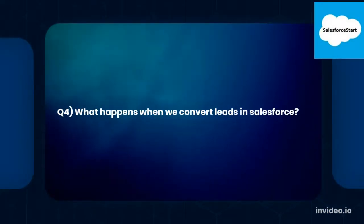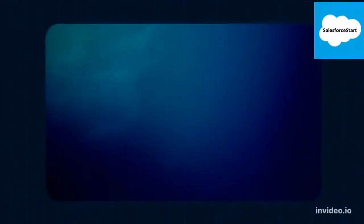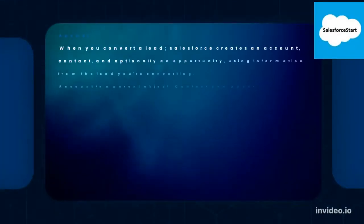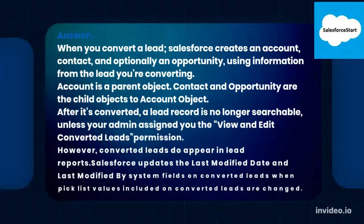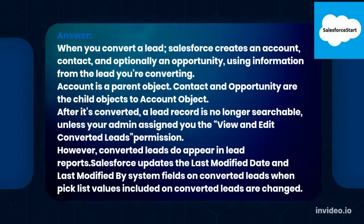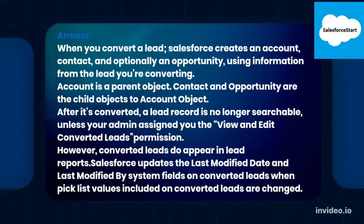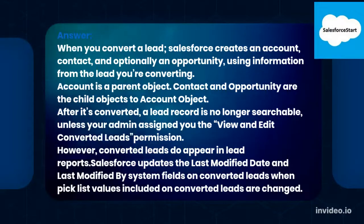Q4: What happens when we convert leads in Salesforce? When you convert a lead, Salesforce creates an Account, Contact, and optionally an Opportunity, using information from the lead you're converting. Account is the parent object; Contact and Opportunity are child objects to the Account. After conversion, a lead record is no longer searchable unless your admin assigned you the View and Edit Converted Leads permission. However, converted leads do appear in lead reports. Salesforce updates the last modified date and last modified by system fields on converted leads when picklist values included on converted leads are changed.